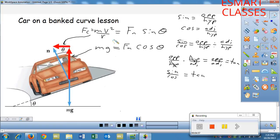What we're going to do is we're going to take this equation over this equation. We're basically taking mv squared over r divided by mg equals fn sine theta divided by fn cosine theta. Because this equals this, and this equals this, we can say that this one over this one equals that one over that one. We're just dividing equals by equals.